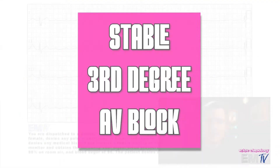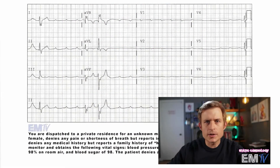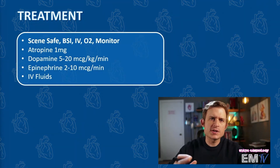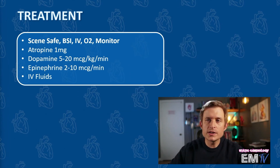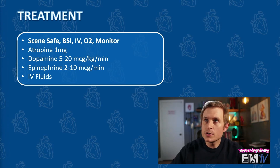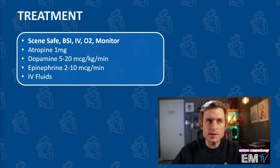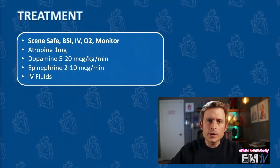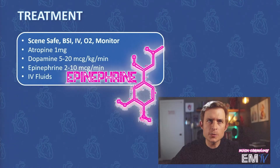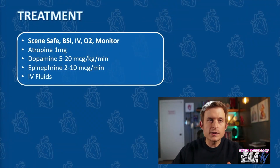We don't get to say that very often. Let's go ahead and now take a look at the treatment, and let's see if you got that right. Just like with all other static cardiology cards, my treatment here is going to begin by reciting the mantra: scene safe, BSI, IV O2 monitor. Because this is a bradycardic rhythm, I'll then go ahead and consider giving atropine 1mg IV push. But because this is a 3rd degree heart block, and atropine relies on the AV node to be functional, this would be largely ineffective. According to the ACLS algorithm, my next choice of medication — because again this is a stable rhythm — will be a dopamine infusion beginning at 5 all the way up to 20 micrograms per kilogram per minute. Additionally or alternatively, I could initiate an epinephrine infusion hanging at 2 to 10 micrograms per minute. I could also add IV fluids, and then of course rapid transport.